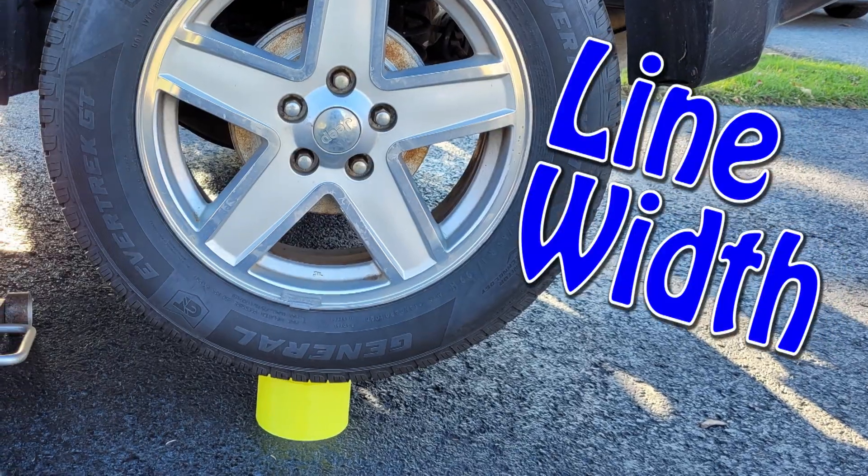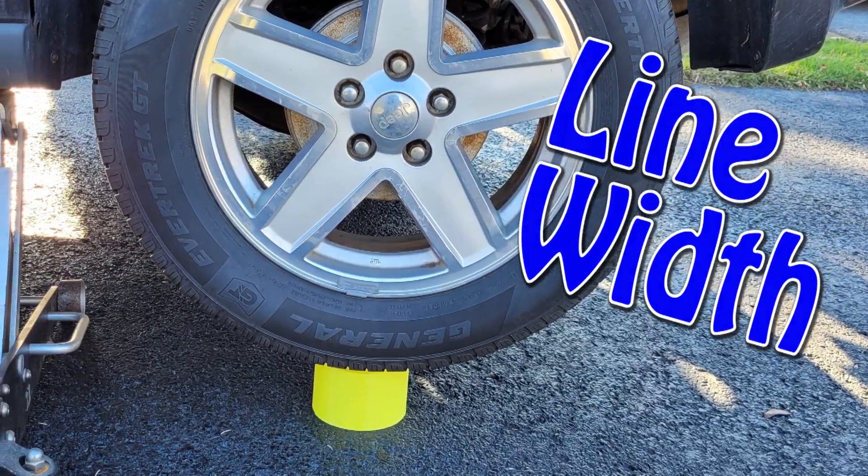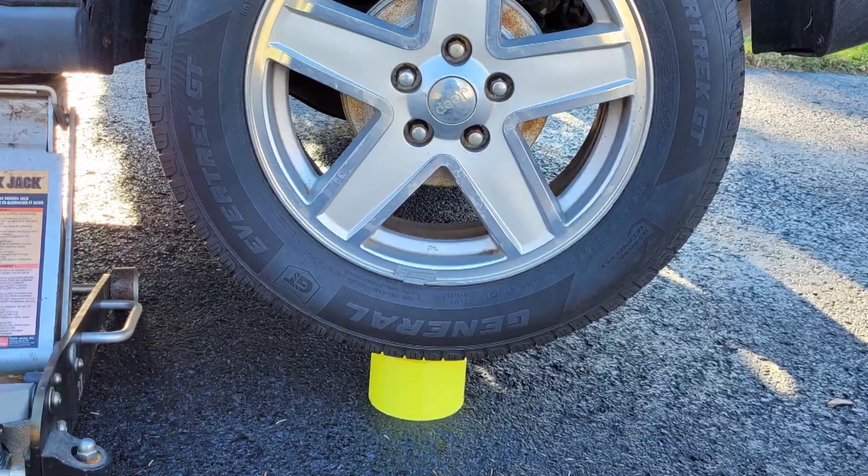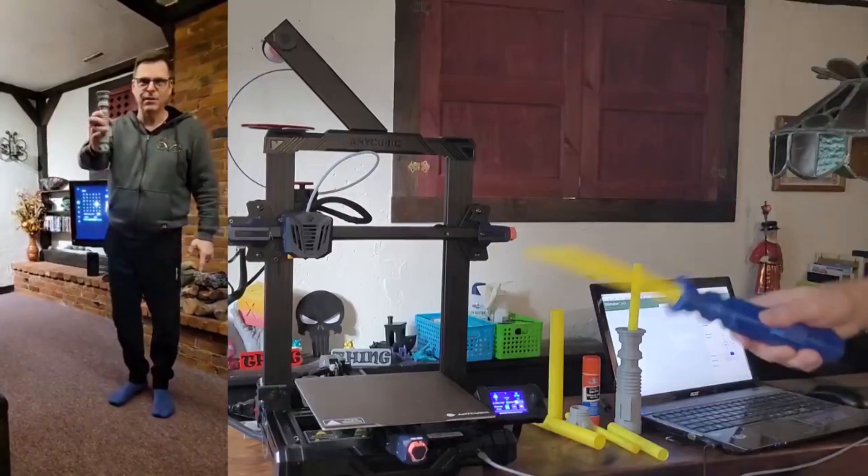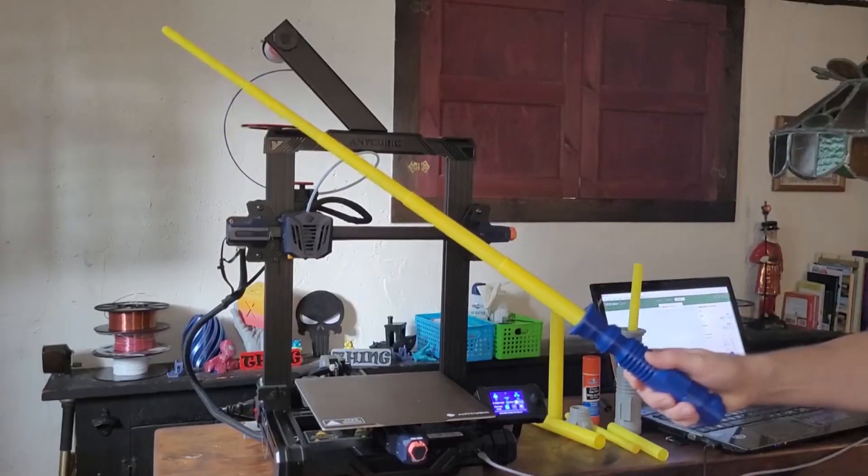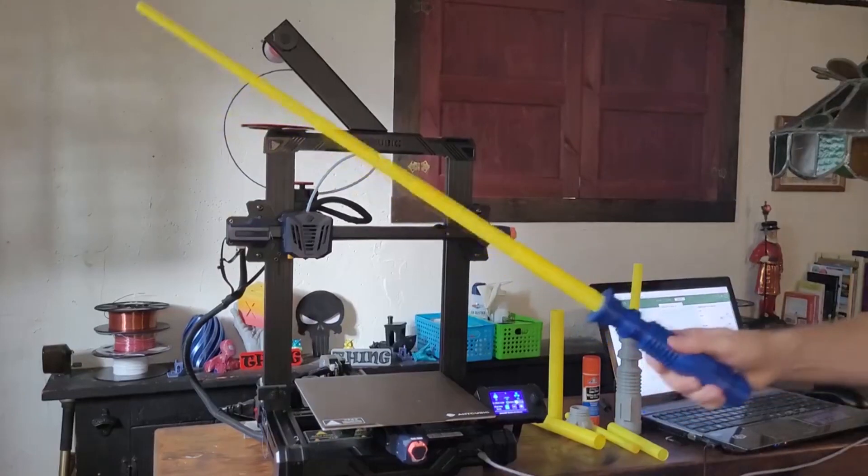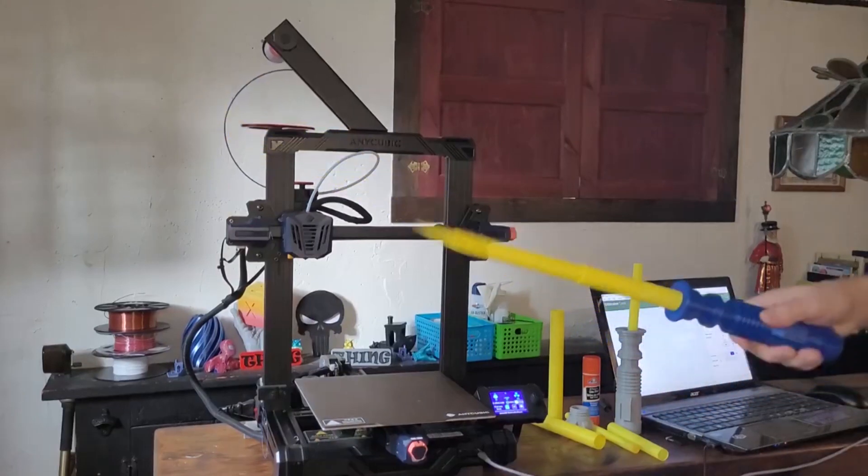The topic today is if you change for a thicker line width, can you print faster and is it stronger? After the mistake I made on the collapsing lightsaber, I wondered if I could print faster if I printed thicker.